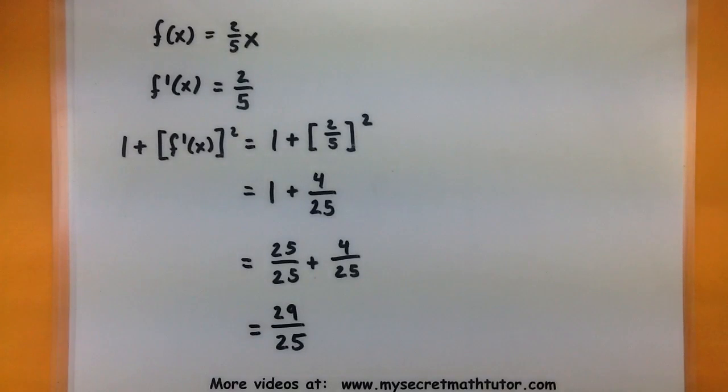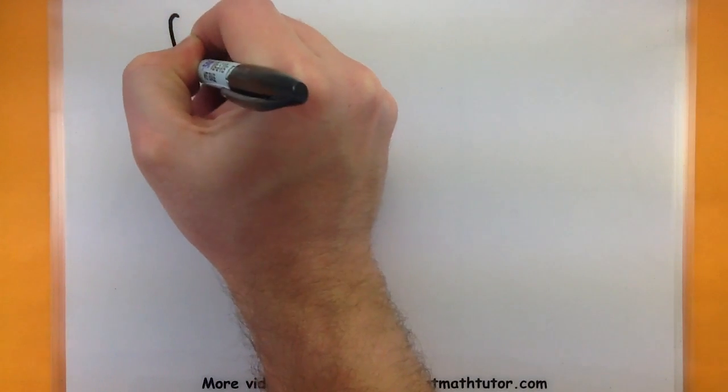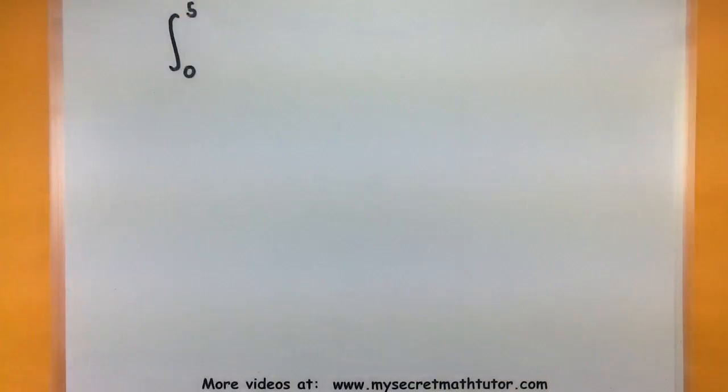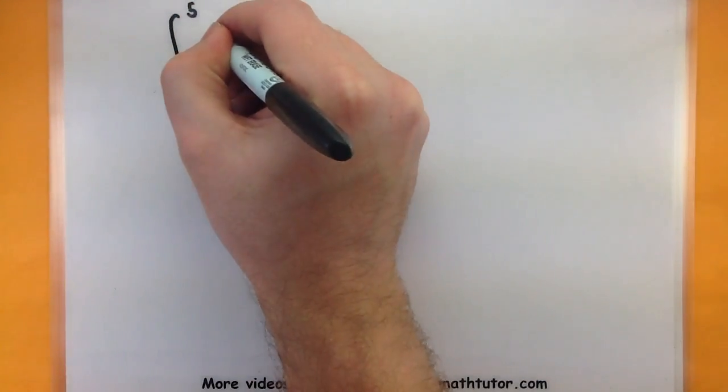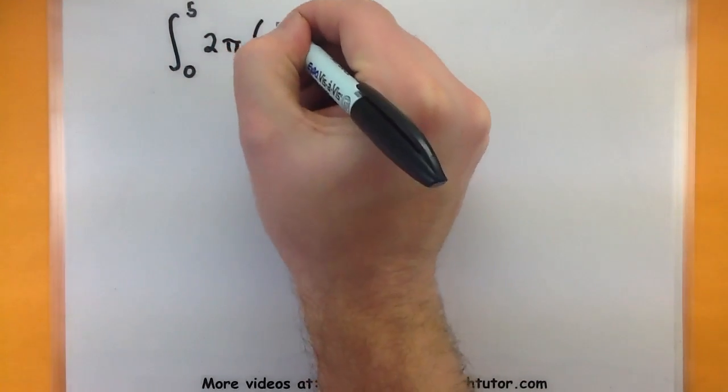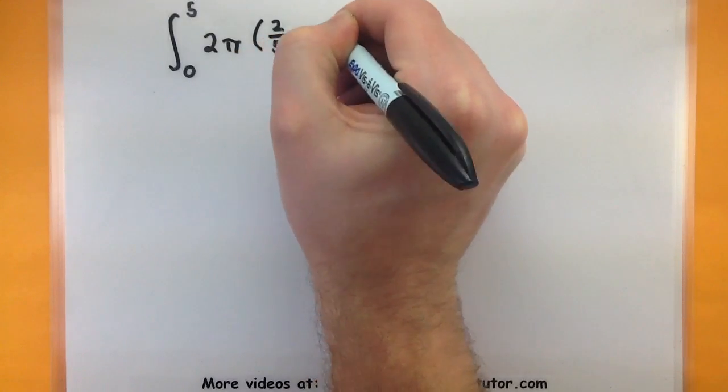Alright, so now that we know this portion, let's go ahead and start plugging in the rest of our pieces and get our integral. So as I mentioned earlier, let's start with the bounds. Our curve goes from zero up to five, and we have our 2π, and we'll multiply this by our function, two-fifths x.